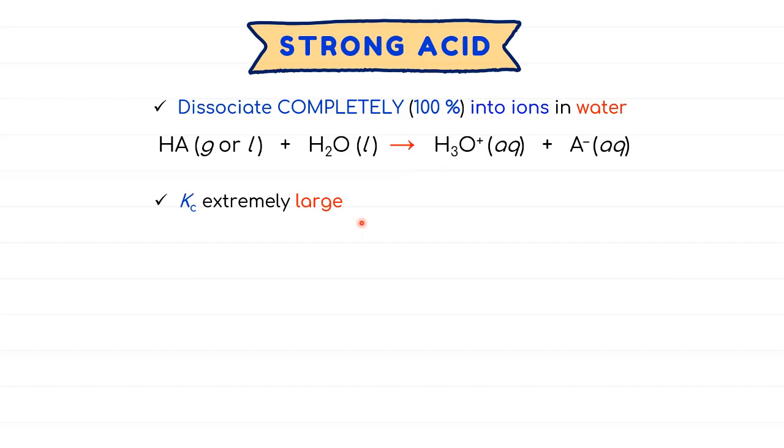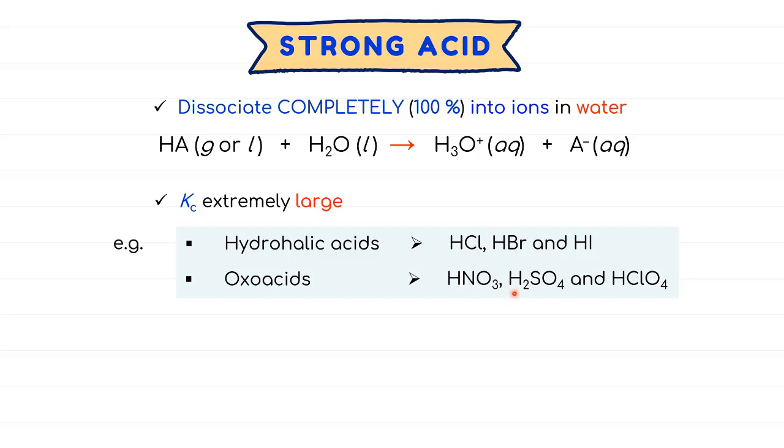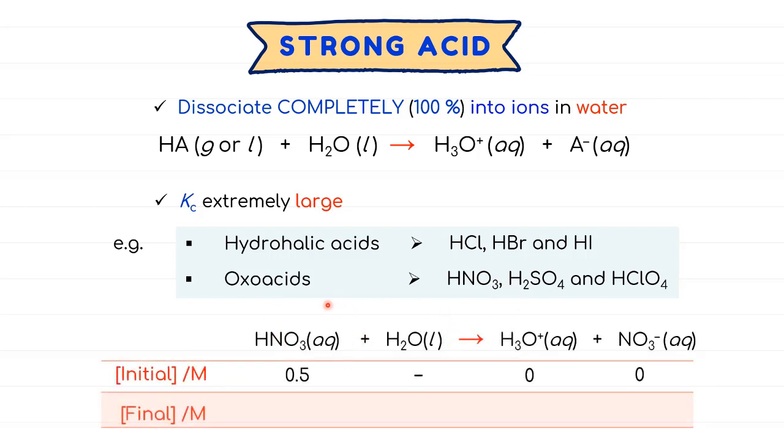So example of strong acids can be hydrohalic acid, the acid with halogens, and oxo acids, the acid with oxygens. Let's say we have this 0.5 molar nitric acid to start with, and then dissociates in water to form hydronium ion and nitrate ion. So once these reactions has undergone complete dissociations, the concentrations of nitric acid will become 0 to produce hydronium ion and nitrate ion with 0.5 molar each. Note that this water molecule is in liquid state, so we can just ignore the value.